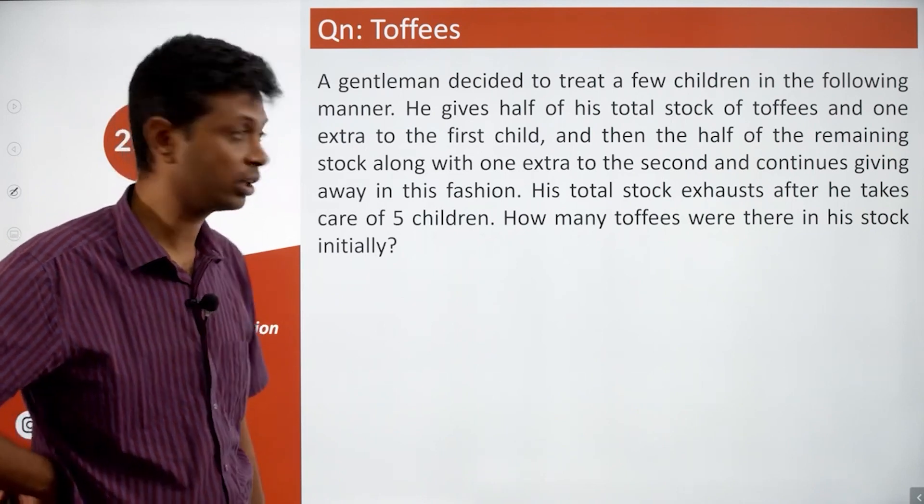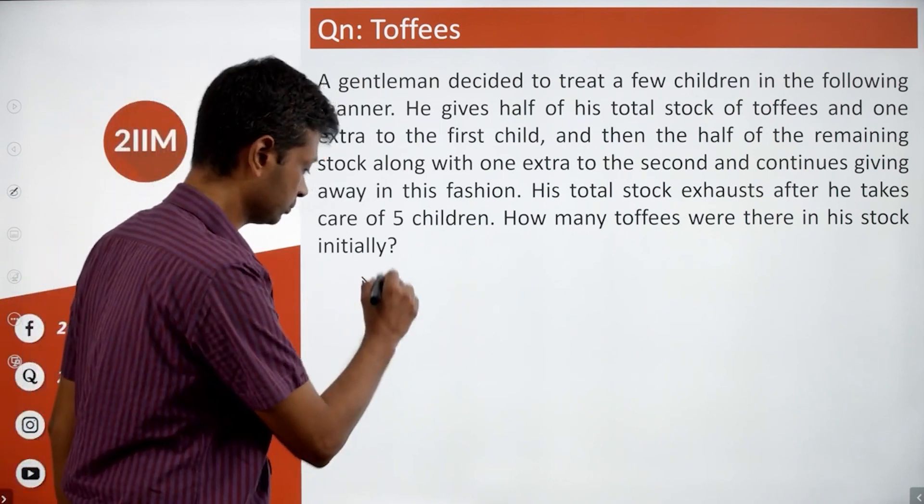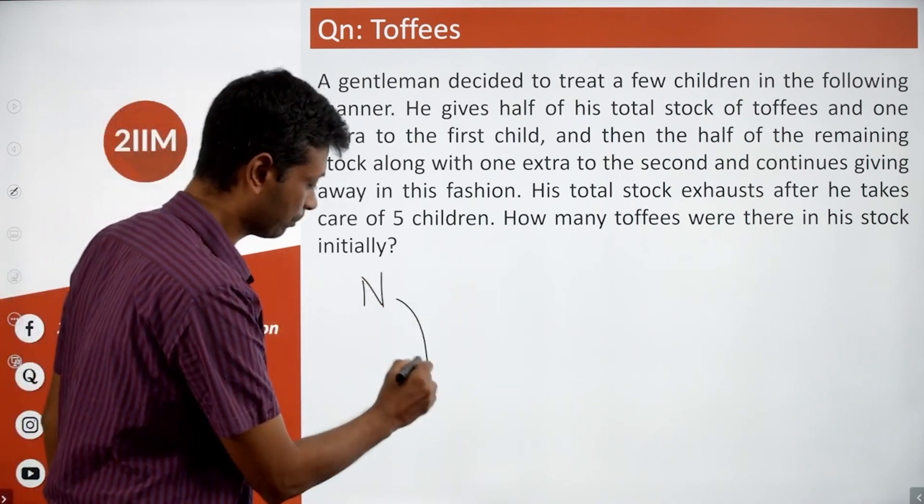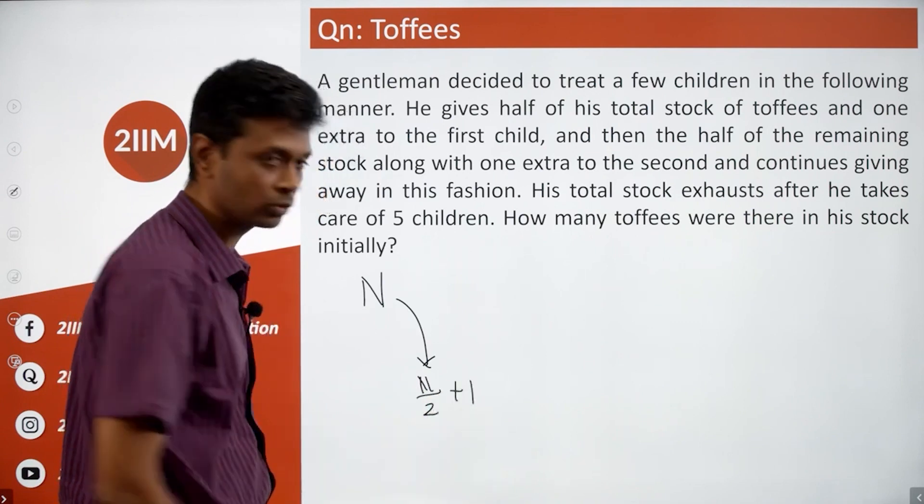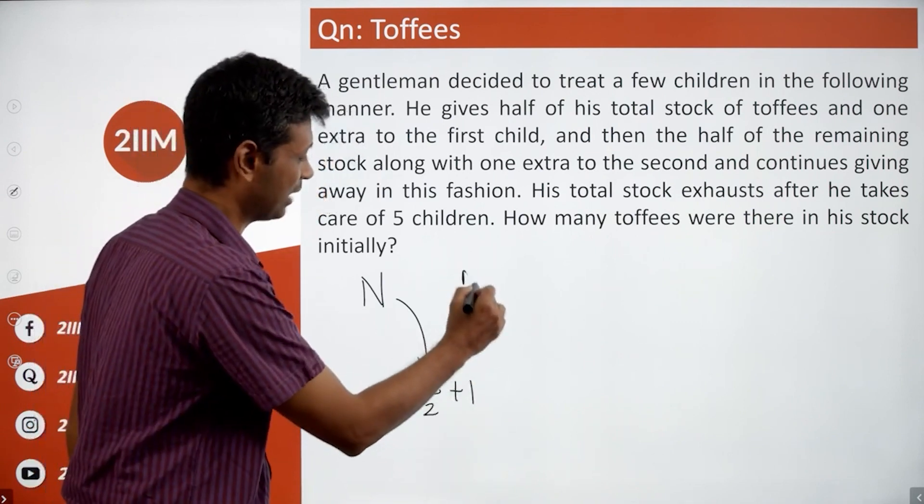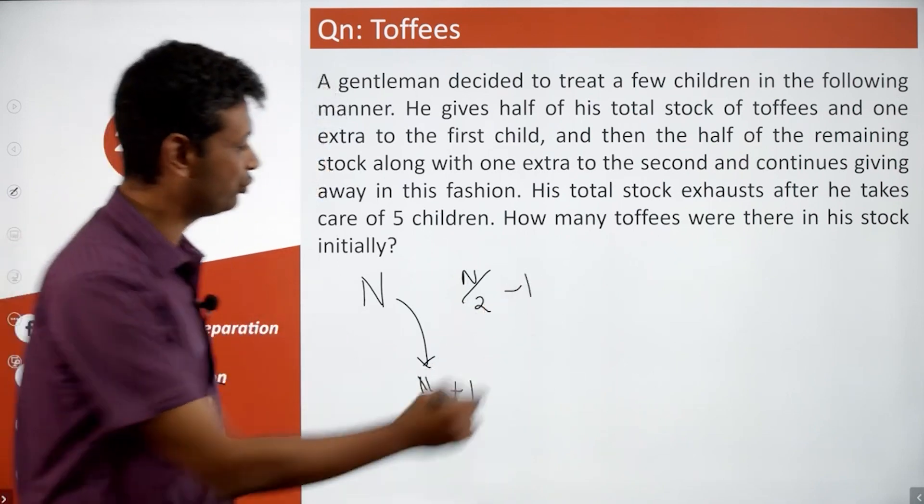Lovely! Let's assume he starts with n. Then he gives away n/2 + 1, or what we have, he'll have n/2 - 1. And then of this, he gives away half plus 1. Half of n/2 - 1 + 1 he gives away, or half of n/2 - 1 - 1 he'll retain.